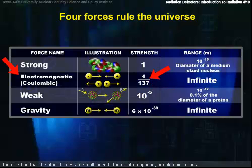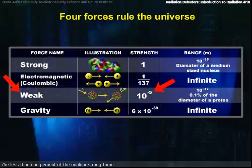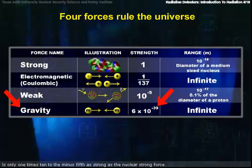The electromagnetic or coulombic forces are less than one percent of the strength of the nuclear strong force. The weak force, which operates only in the nucleus, as does the strong force, is only one times ten to the minus fifth as strong as the nuclear strong force.